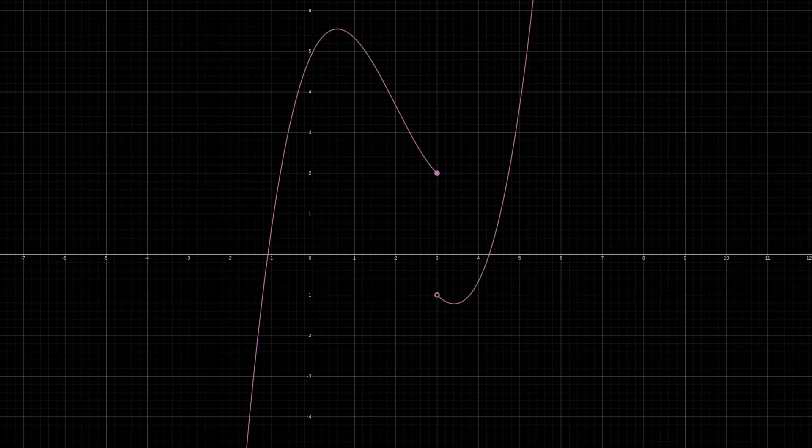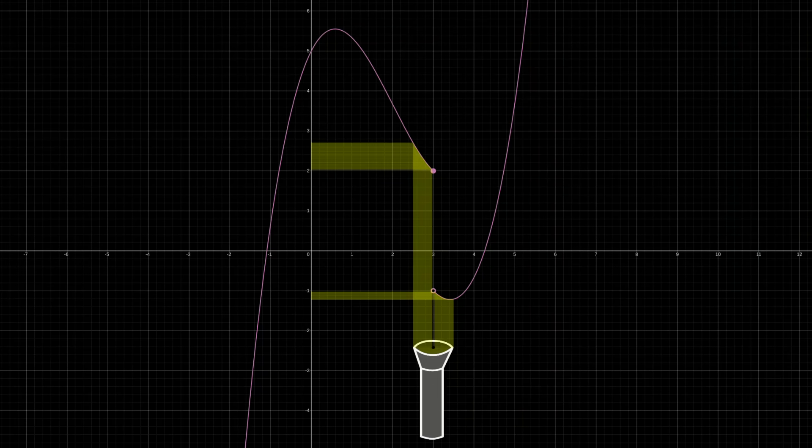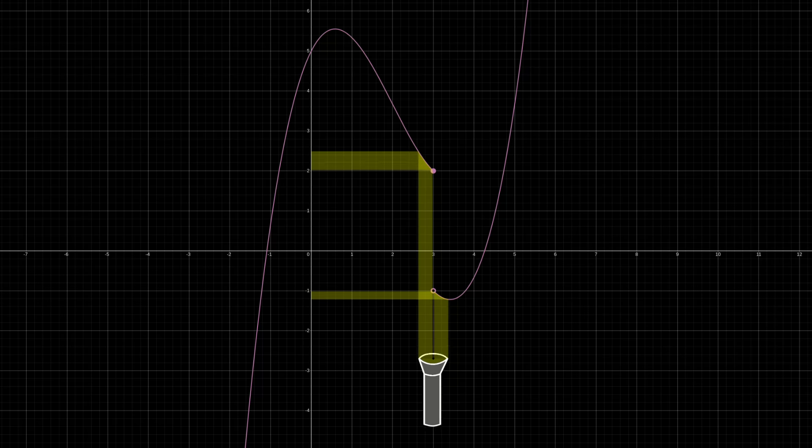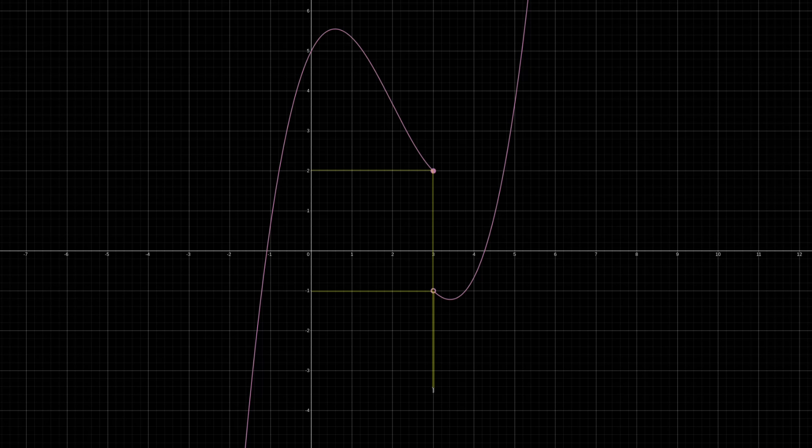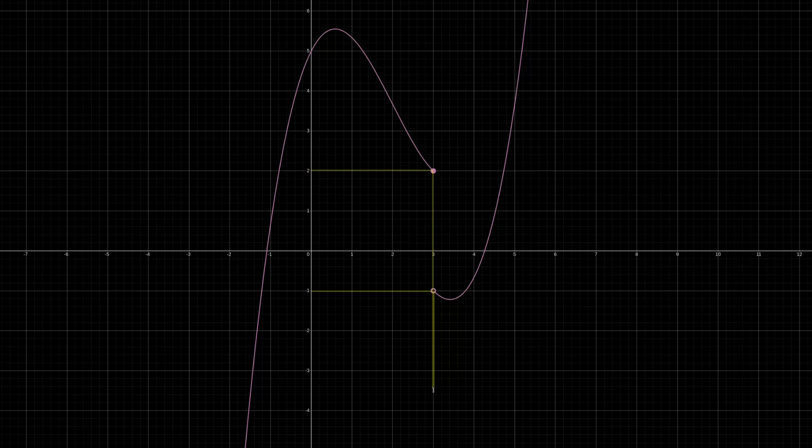Okay, but what about this function, which has a jump discontinuity? If we train our flashlight directly on the point of discontinuity, no matter how tiny we make it, it still highlights two different spots on the y-axis. So because there's no one limiting value, we would say that this limit does not exist.